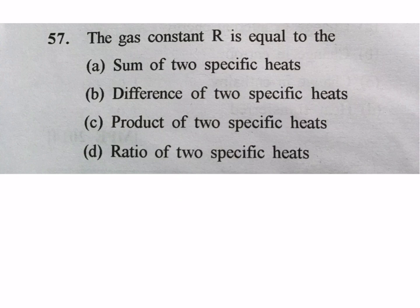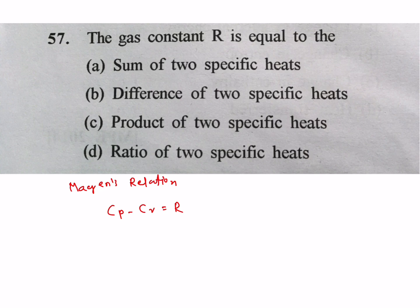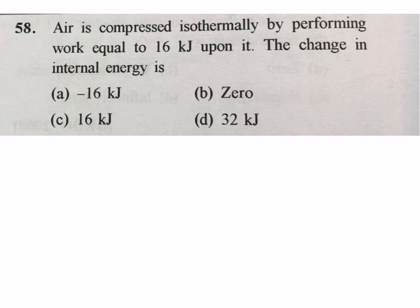Next question: the gas constant R is equal to? From the Mayer's relation: Cp minus Cv equals R, where R is the gas constant. Cp is specific heat at constant pressure and Cv is specific heat at constant volume.